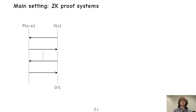Our main focus are zero-knowledge proof systems. So a quick recap: we have a prover and a verifier and this NP language, where the prover has a statement and a witness and the verifier wants to be convinced that X lies in the language. They interact and in the end the verifier outputs its verdict whether it accepts the claim or not.